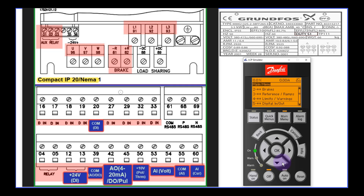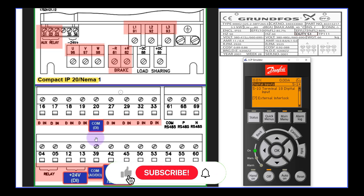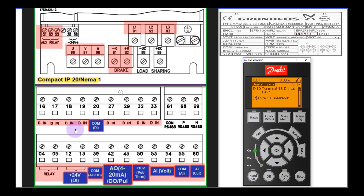Press the down button until you see 'digital input output,' then press the OK button. Press the down button to select 'digital input,' then press OK. I have a toggle switch I will use to start my motor. I will connect my toggle switch to terminal 18 and terminal 20. I press up/down until I see terminal 18 digital input, then press OK to make changes. I will use this as a start toggle switch, so I press the up or down arrow key until I see 'start,' select it, and press OK to accept.